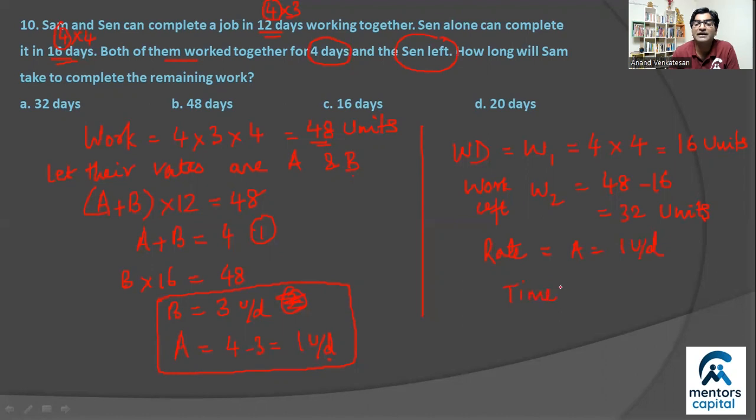So we have individual rates, 1 unit per day and 3 units per day. First four days work done, let's call that W1, will be their combined rate, that's 4, into time worked, that is also 4. So basically 4 into 4, 16 units out of the 48 units. So the work left, W2, would be nothing but 48 minus 16, that's nothing but 32 units. So 32 unit work left. And now Sen has left, so rate will be rate of Sam which is A, which is equal to 1 unit every day. So time we know is nothing but work upon rate, so here work is 32, rate is 1 unit per day, so time taken should be 32 days. So correct answer will be option A, 32 days.